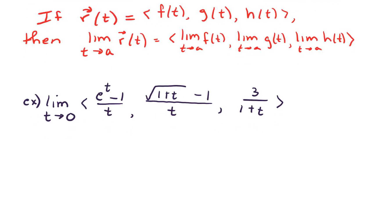By the definition, this limit of the vector-valued function requires me to take the limit of each piece. So I'm going to write this down as limit as t goes to 0 of e to the t minus 1 over t, limit as t goes to 0 of square root of 1 plus t minus 1 all over t, and the limit as t goes to 0 of 3 over 1 plus t.